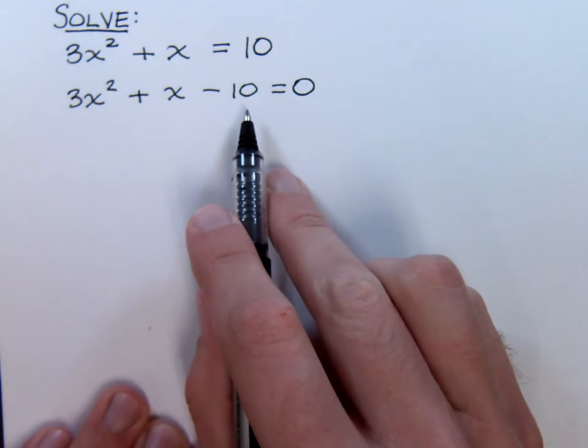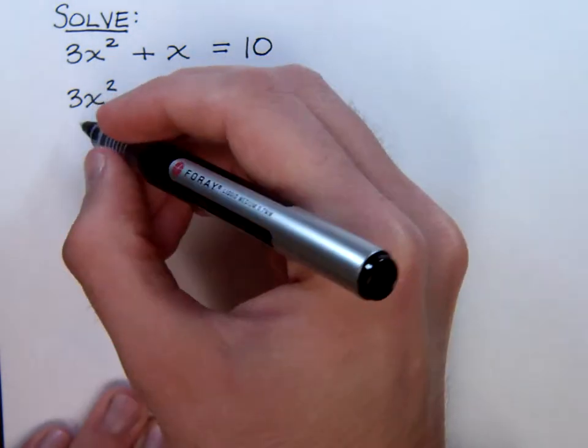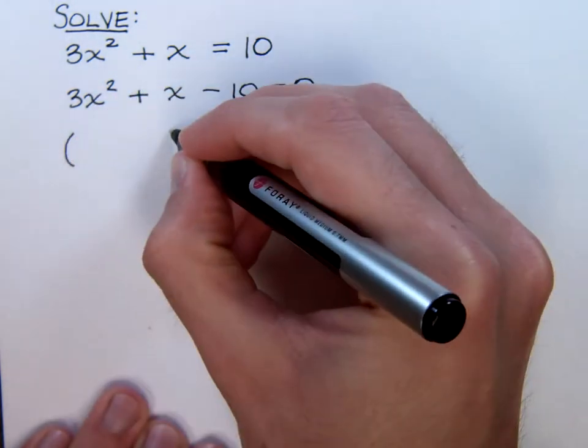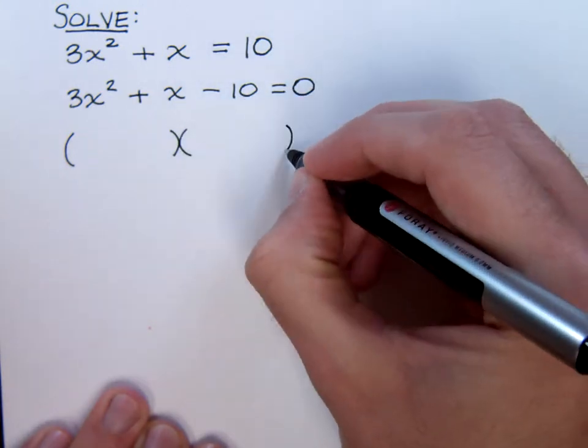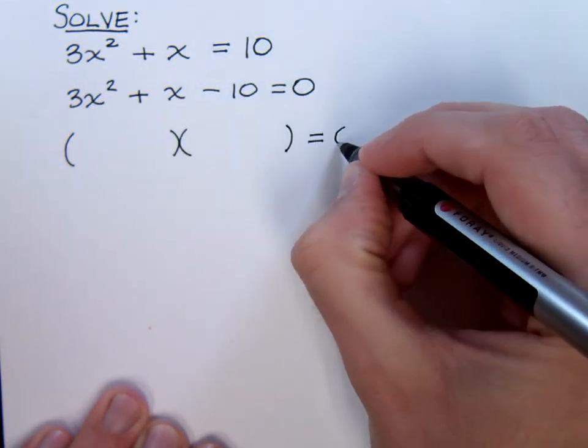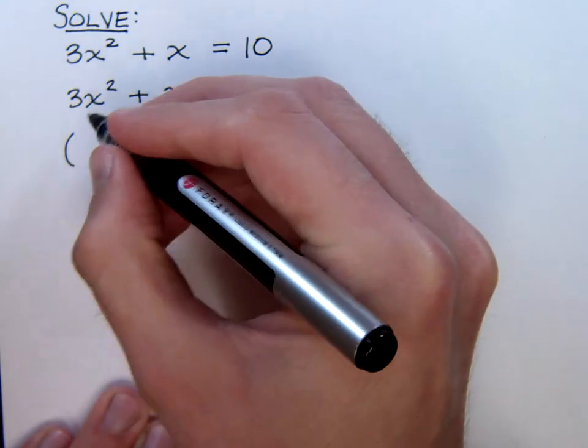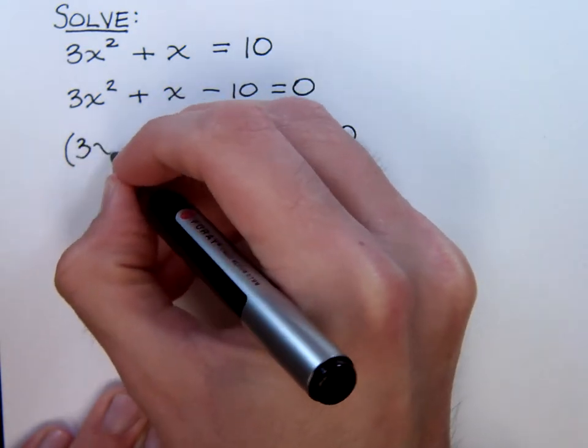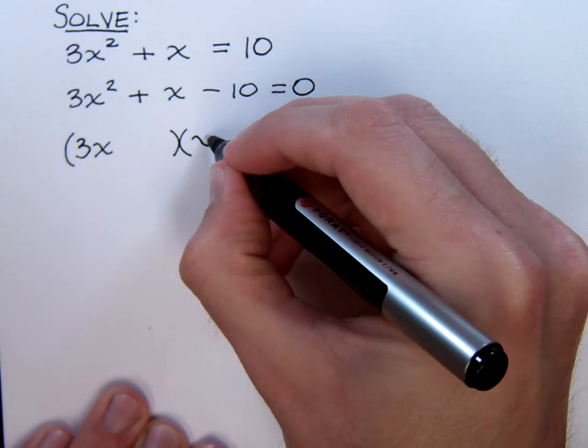And now we just need to factor this guy. Now, since we have a coefficient here in front of the x squared, we have to make sure that we take care of that guy whenever we factor. Okay, so the 3x squared is going to break down, we know for sure, to be 3x and x.